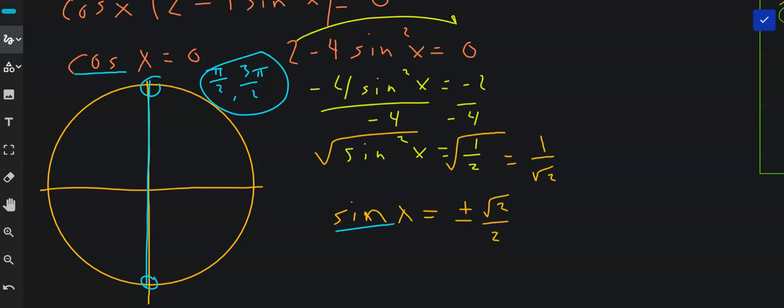Y value at radical 2 over 2. Y value at radical 2 over 2 there and there. Y value at negative radical 2 over 2 there and there. So four more answers. The positive radical 2 over 2 is going to give me pi over 4 and 3 pi over 4.